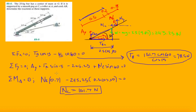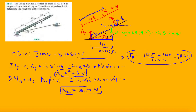Now that allows us to solve for Ay, the reaction at the roller. Doing the arithmetic from the Y equation: 245.25 minus 151.7 times sine 60 minus 78.5 times sine 15 gives Ay equals 93.6 newtons.